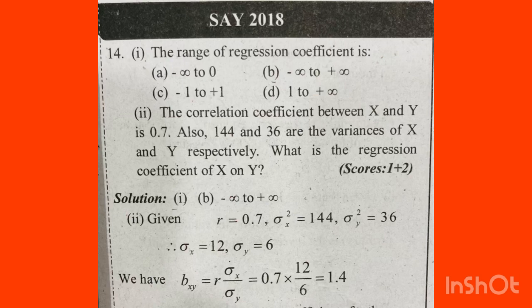What is the regression coefficient of x on y? Just apply the equation. The correlation coefficient is 0.7. We have the variance: sigma x squared is 144, and sigma y squared is 36. Now, we need to convert variance to standard deviation — you have to take the square root of the variance.